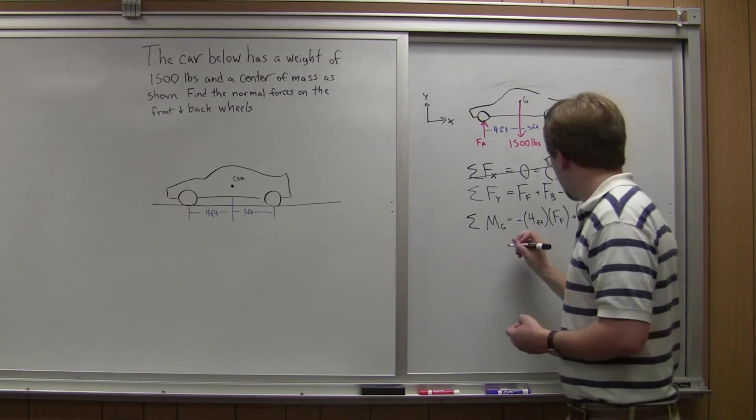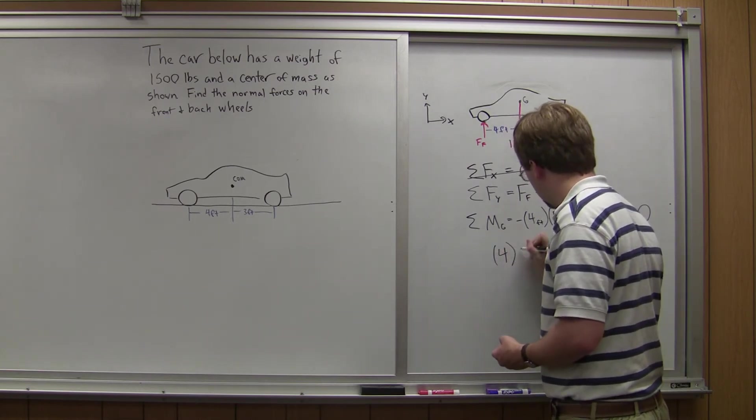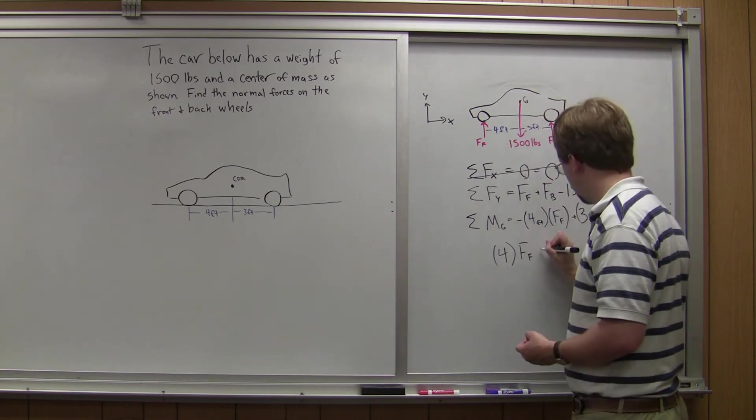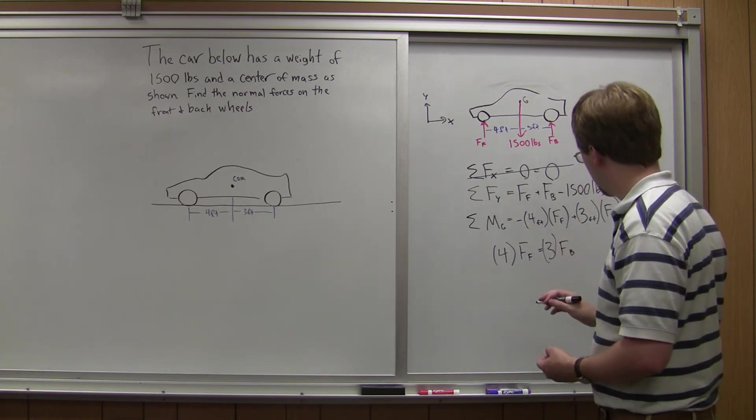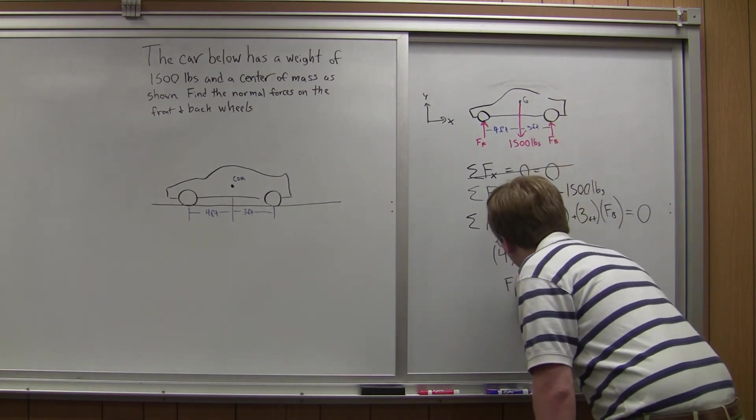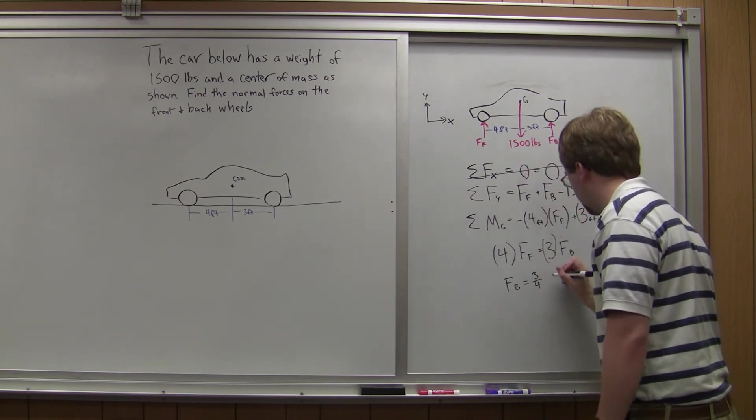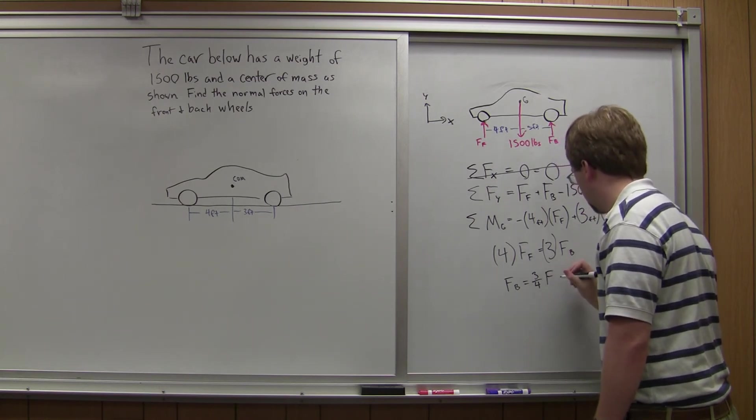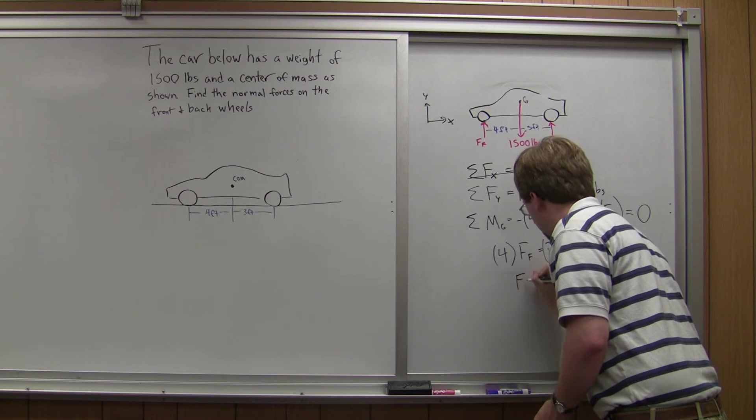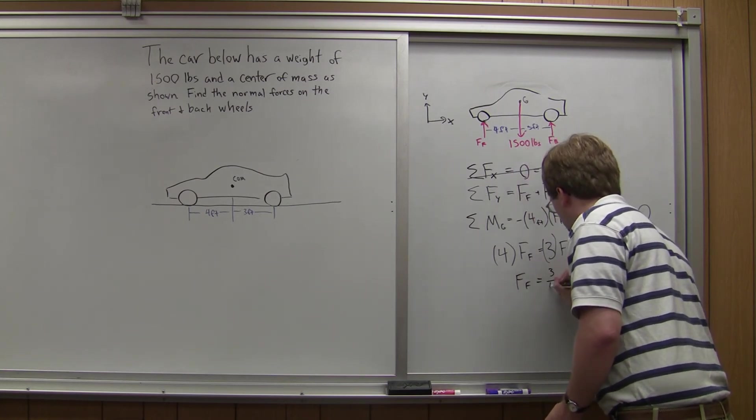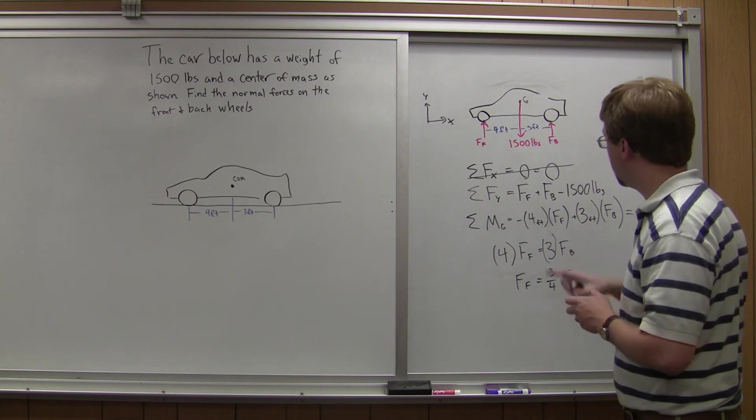So if I rearrange this, I get 4 times Ff equals 3 times Fb, or Fb is going to be equal to 3 quarters of the Ff. So I can use this substitution in this top equation here.